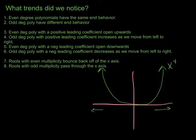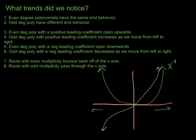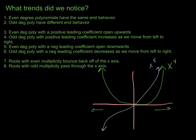What about an odd-degree polynomial? Let's look at x to the 5th — it starts negative, hooks back through, and eventually moves positive. For x to the 5th, as we move to the left it's decreasing, and as we move to the right it's increasing. So it has different, opposite end behaviors compared to even-degree polynomials.